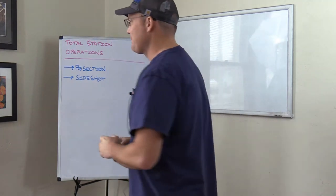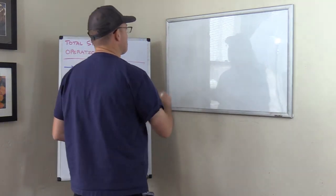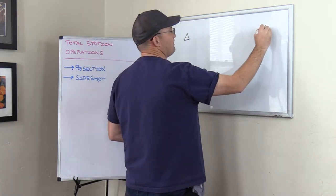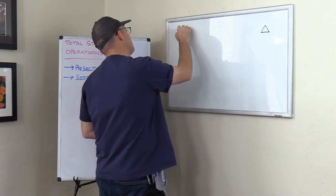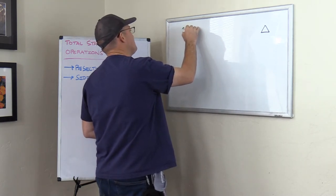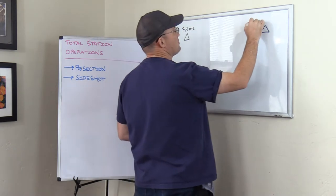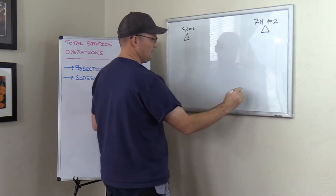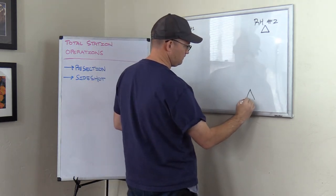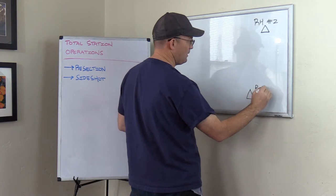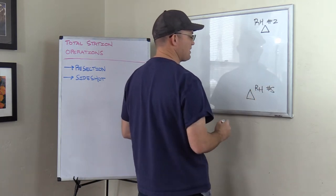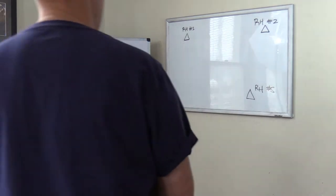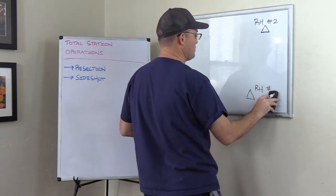So let's talk about a resection. Resection is a little different from a traditional total station setup. I don't particularly like resections. You're not allowed to use a resection at my shop unless you have no other choice. We'll talk about when you might be in that situation as a party chief, but I'm going to walk you through how a resection works because sometimes that's your only option, and a lot of other shops use resections all the time.